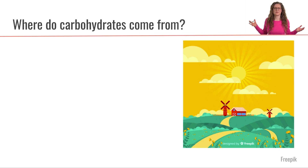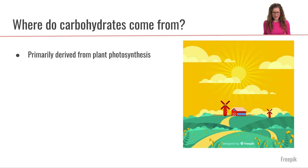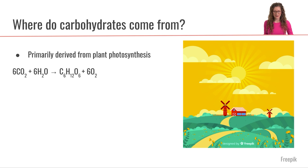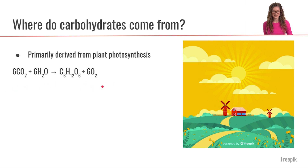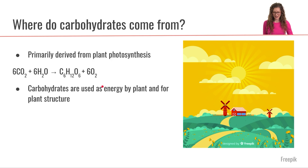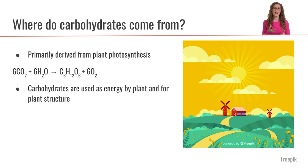The first general question is where do carbohydrates come from in our diet, and it is primarily from plant photosynthesis. Here is the chemical reaction of plant photosynthesis — of course we require sunshine as well. Carbohydrates in plants are used for both energy as well as for plant structure, and that's where we get some of the diversity in carbohydrates in our diet.